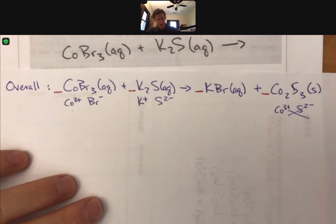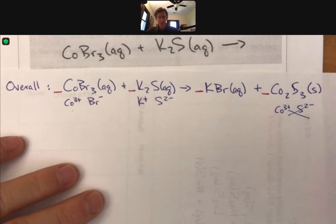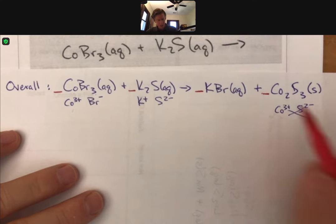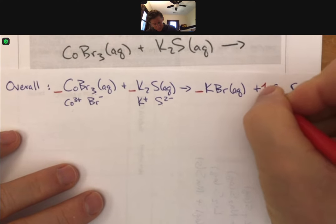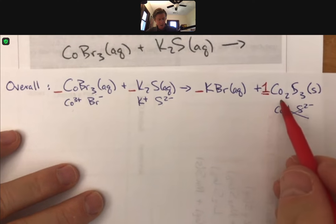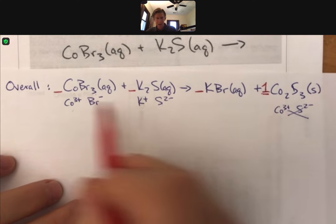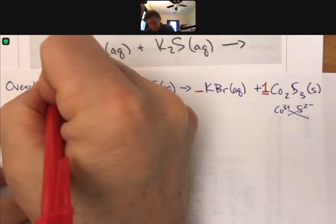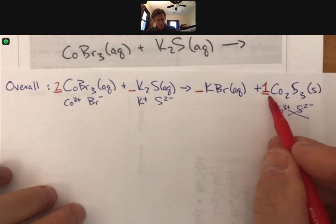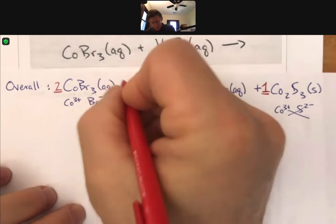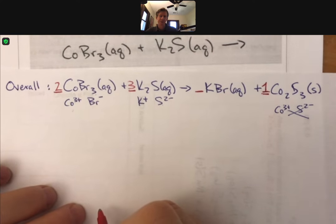Put a one coefficient in front of the thing with the most different types of atoms. And if there's a tie, which there is here, then the most actual atoms. I see five atoms over here. So I'm going to put a one right here. And then I'm going to balance my cobalt. That means that I'm going to need a two for cobalt three bromide. And then I'm going to balance my sulfurs. I have three here. That means I need a three in front of the potassium sulfide.